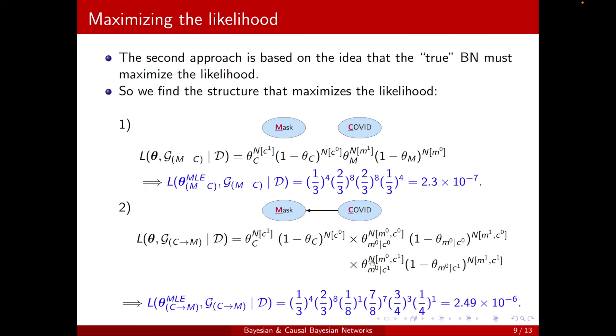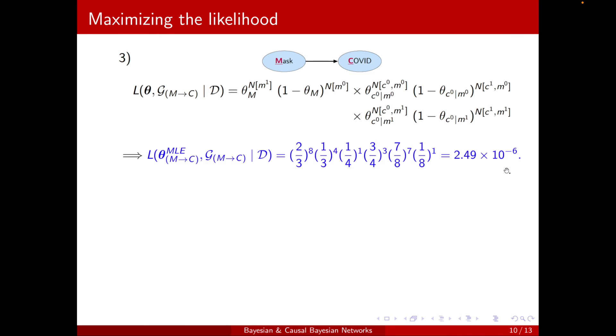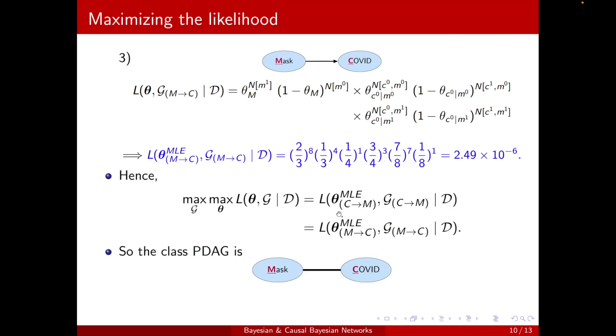When the two are linked to each other. And it's not surprising to see that when I flip the link, then I will get the same final likelihood. So the structure that I was interested in that would maximize the likelihood appears to be either when Mask is linked to COVID or COVID is linked to Mask or the class PDAG, the equivalent, the I-equivalent class, where there's just a link between them.